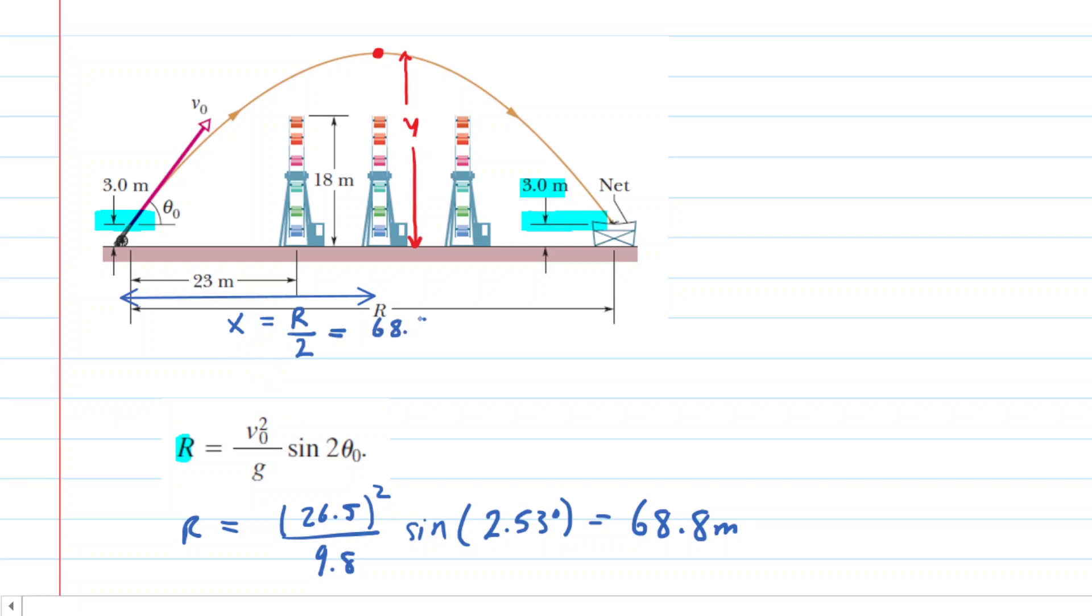We'll take that 68.8 meters, divide that by 2. That is 34.4 meters. So that is half of the range, the horizontal distance the acrobat travels to get to the center of his trajectory, which is exactly where that middle Ferris wheel is located. Now we have X, it's 34.4 meters. We have all the other data we need to plug into the trajectory equation: the initial launch angle, the initial speed, and the value of G.